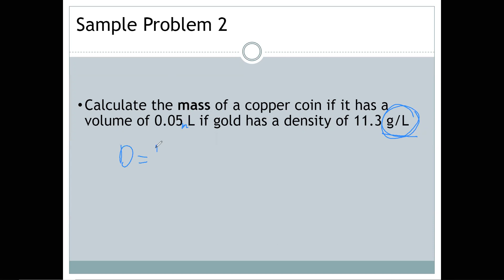We're still using the D = M/V formula. But in this case, we know what that density is. That's one of our given numbers. So we can just go ahead and plug in 11.3 grams per liter for D. It says calculate the mass. That's what we want. So that's our variable. And it gives you the volume. So you just go ahead and plug in 0.05 liters here. And then you are going to solve for M.